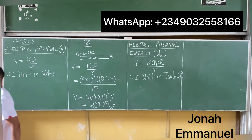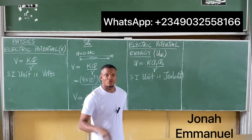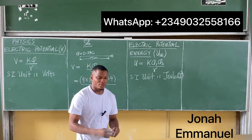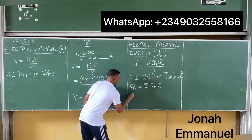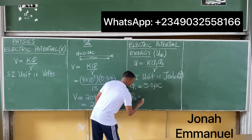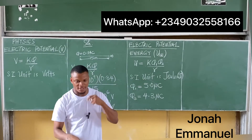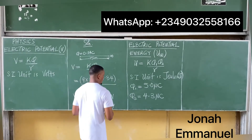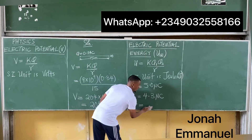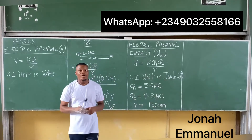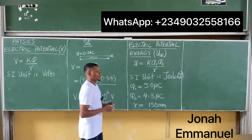Example: Two charges, q1 = 5.0 microcoulombs and q2 = 4.3 microcoulombs, are separated by a distance of 150 millimeters.